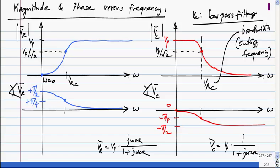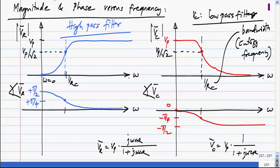The exact values of phase at the cutoff frequency depend on the circuit. Typically the frequency at which the amplitude goes to 1 over root 2 of the maximum value is defined as the bandwidth. Similarly, Vr could also be the output — if you take output across the resistor in the series RC circuit, that is a high pass filter. The cutoff frequency is the same, 1/RC. You can see that these two are complementary to each other: the high pass filter does not allow DC at all, blocks low frequencies, and completely allows high frequencies.